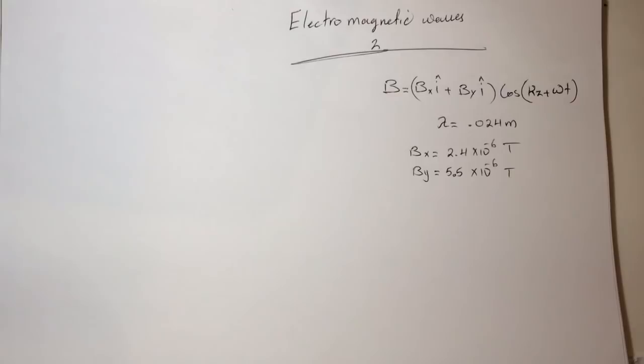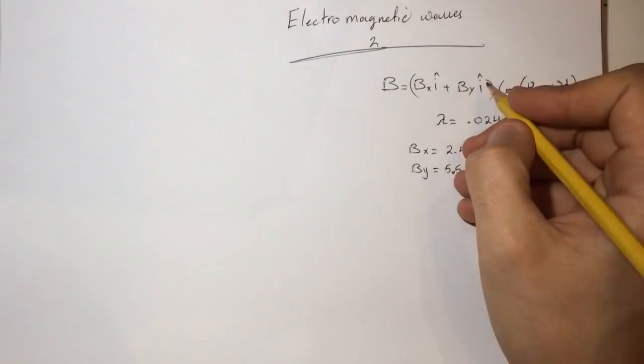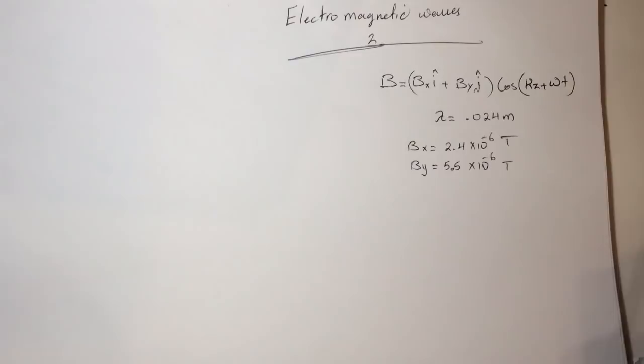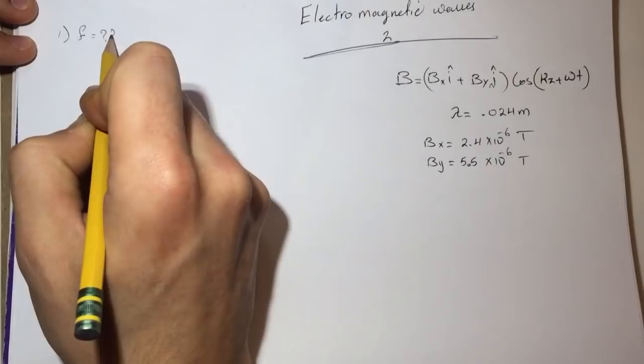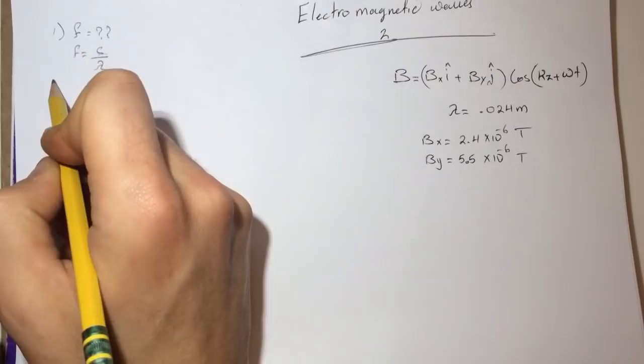Hi guys, this is Smart Physics tutorial for electromagnetic waves 2. In this question they give us the equation for B in the i and j directions, they gave us lambda, and they give us the magnitude in the x and y directions. The first question is asking what is the frequency, and frequency is simply just c over lambda — a direct question where c is the speed of light.